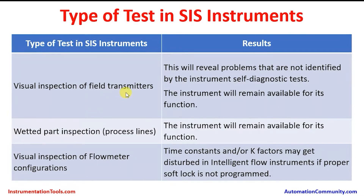Visual inspection of field transmitters: this will reveal problems that are not identified by the instrument self-diagnostic tests. The instrument will remain available for its function — it will not be taken out of service but will continue providing protection. Only the visual inspection will be performed, keeping the instrument in running condition.